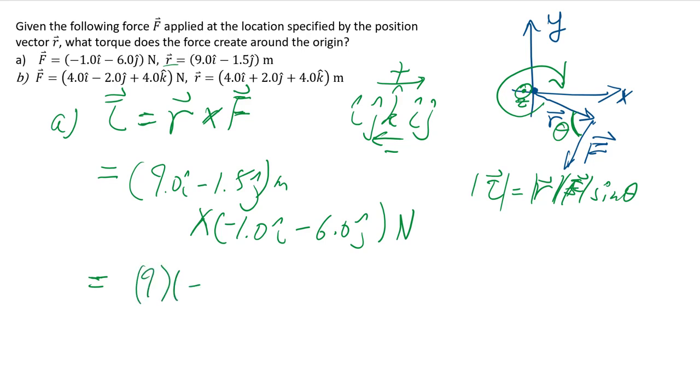I cross I is 0, so we don't have to write that. Then we have 9 times negative 6. Remember, the negative is important. I cross J, and I cross J gets you positive K, right? You can actually, in the future, just write positive K in right away. I just want to show you a little more explicitly the first time around.